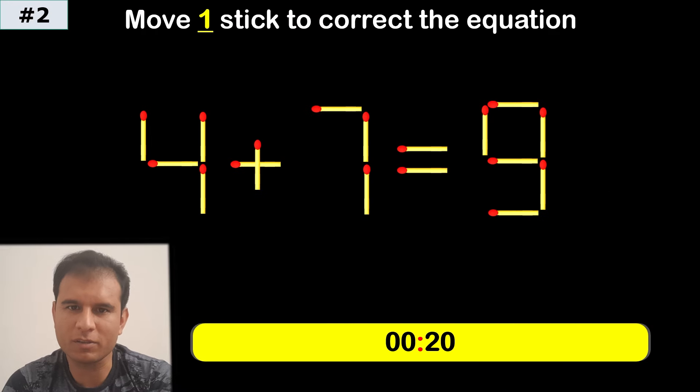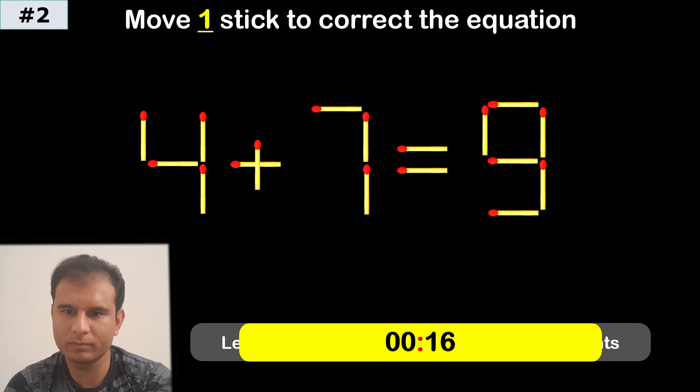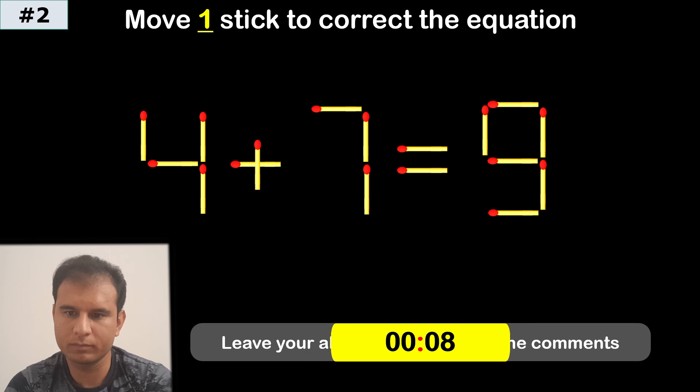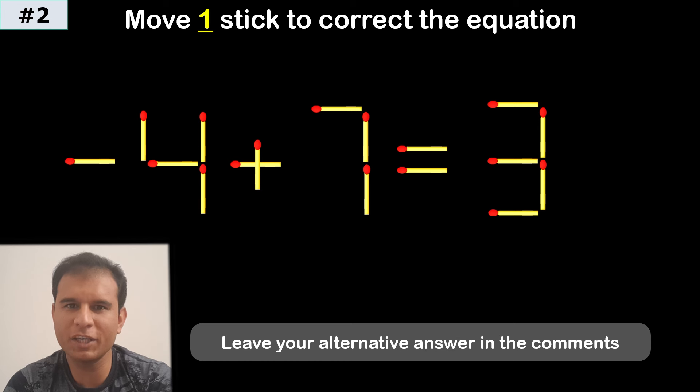Second puzzle. Negative 4 plus 7 equals 3.